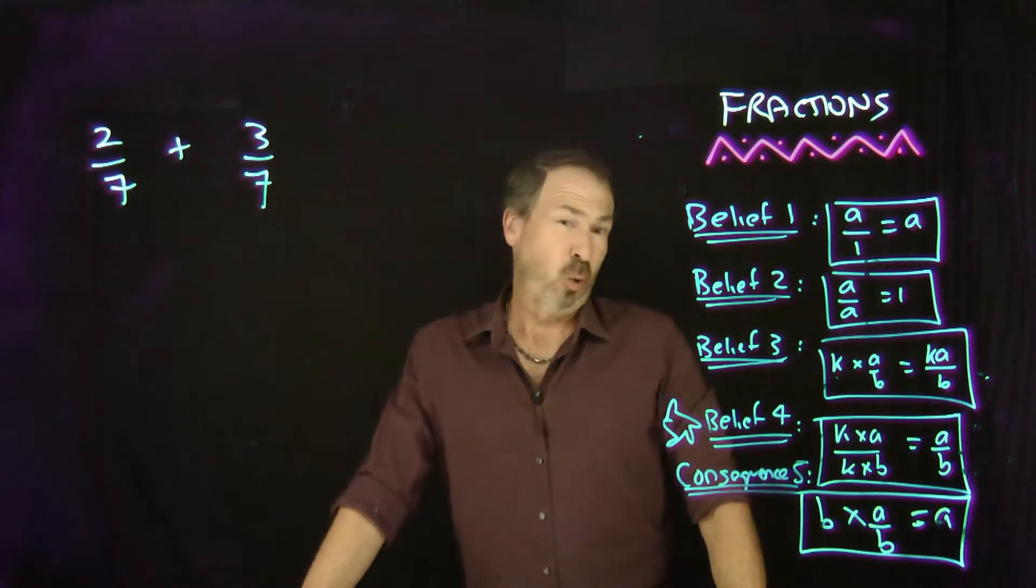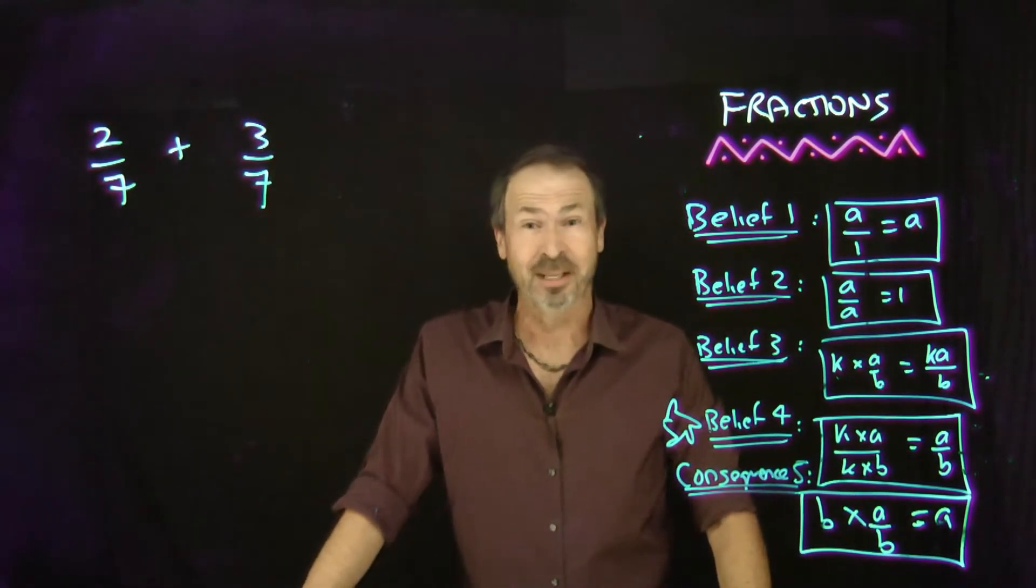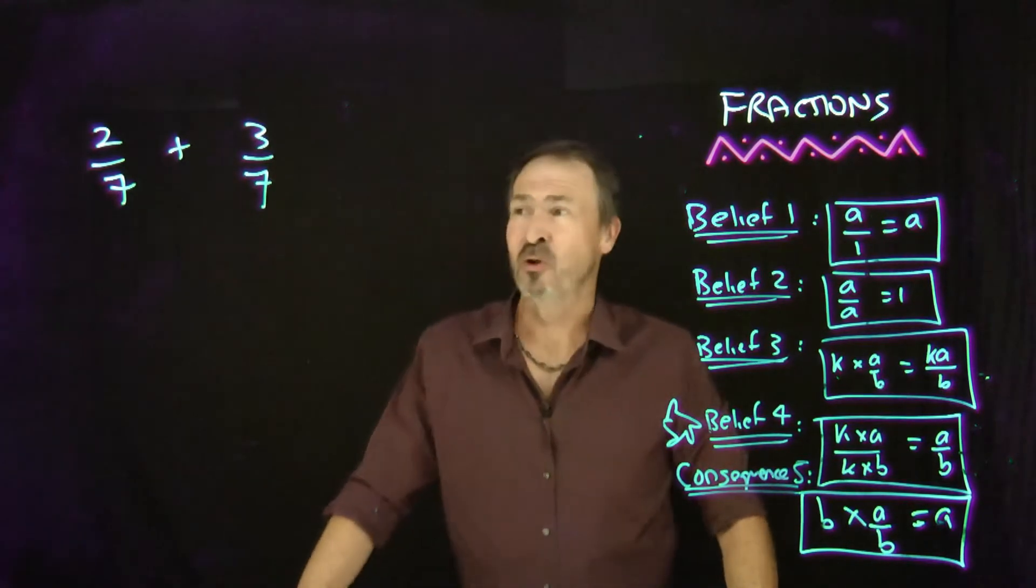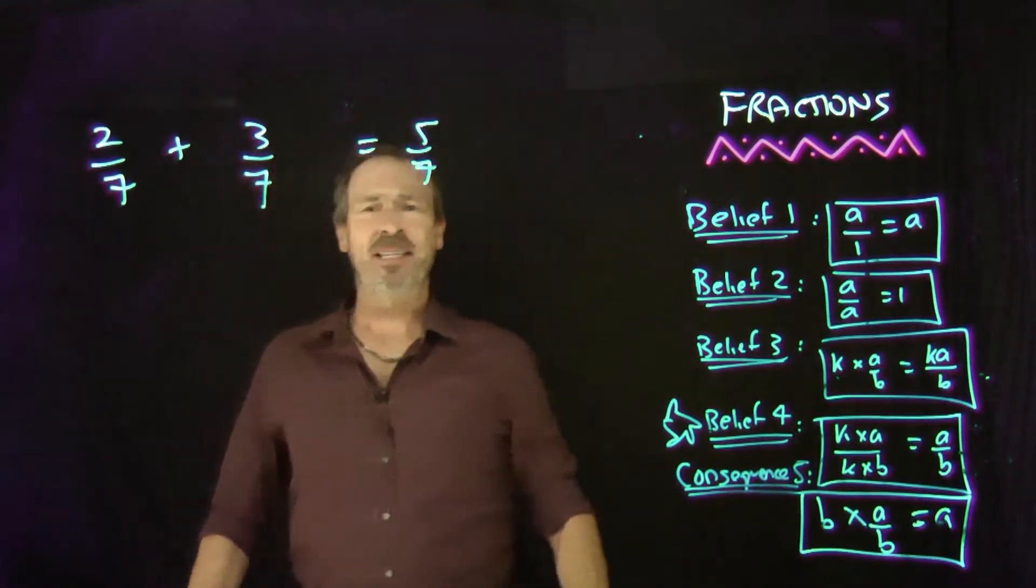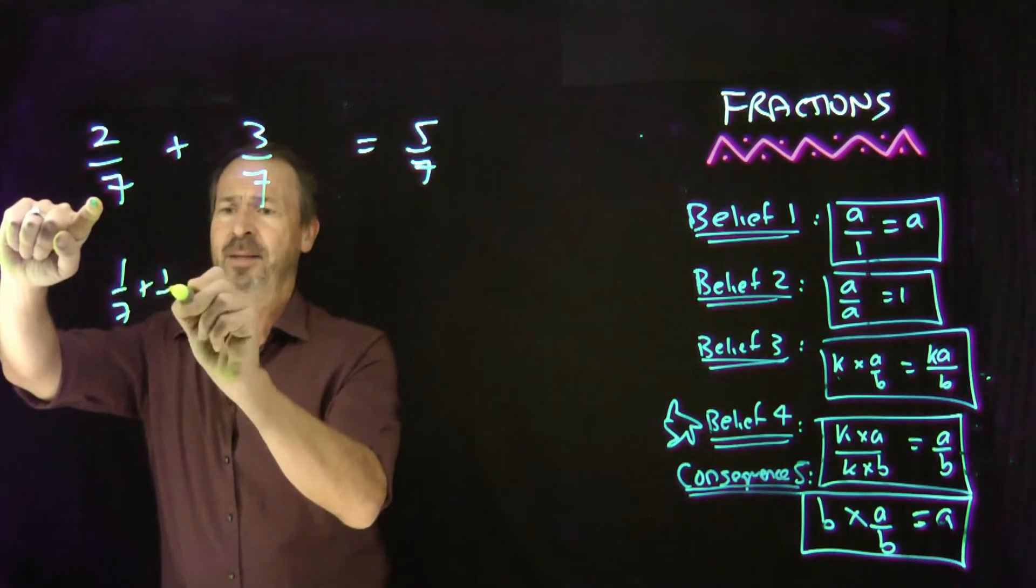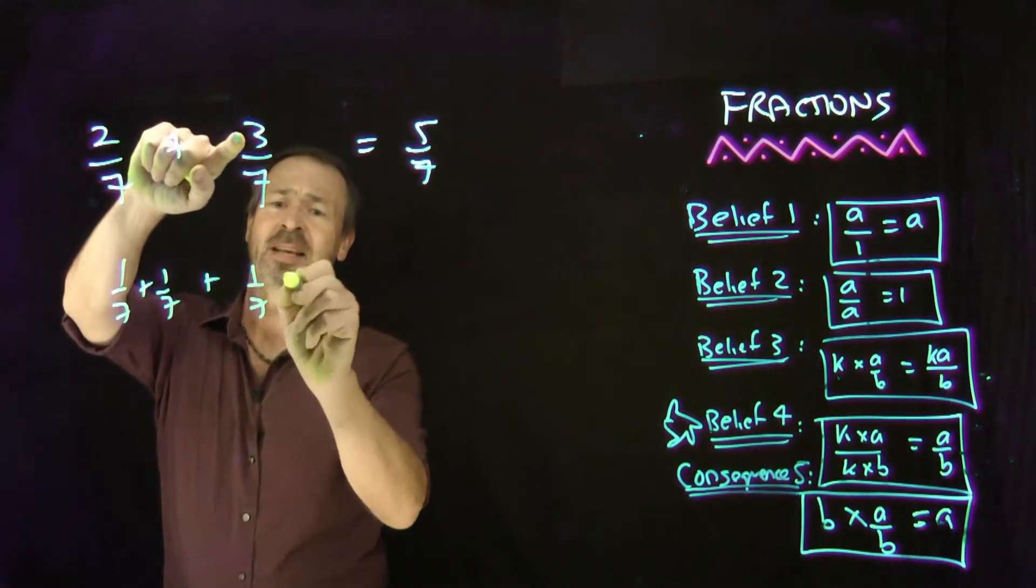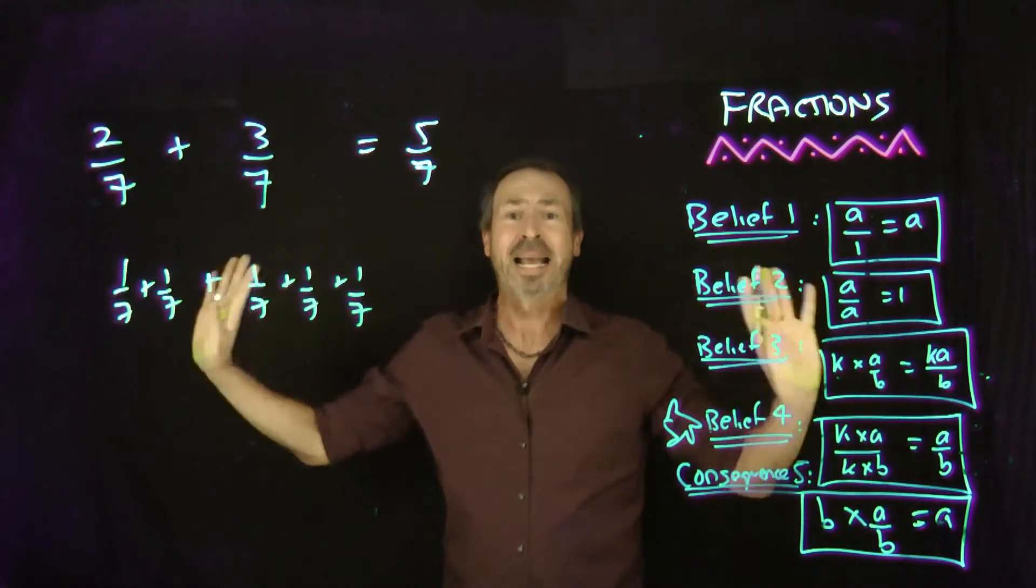2/7 plus 3/7. Sounds like I'm dealing with quantities of sevenths. And 2 something plus 3 something. Be that 2 apples plus 3 apples. Or 2 draughts plus 3 draughts. Or 2/7 plus 3/7. Must be 5/7. Must be 5/7. And that kind of makes sense. I've got 2 copies of 1/7. So it's a 7th and a 7th. Plus 3 copies of a 7th. A 7th and a 7th and a 7th. Clearly, I have 5 copies of a 7th. So it's all hinged together.